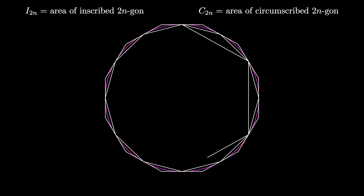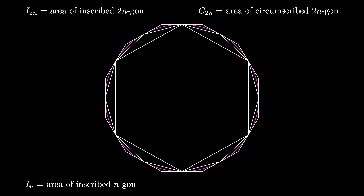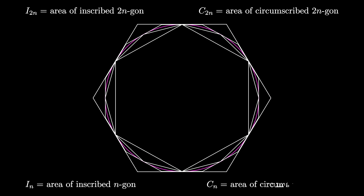Now draw an inscribed regular n-gon, and let i sub n be the area of this n-gon. And finally, draw a circumscribed regular n-gon, and let c sub n be the area of this regular n-gon.